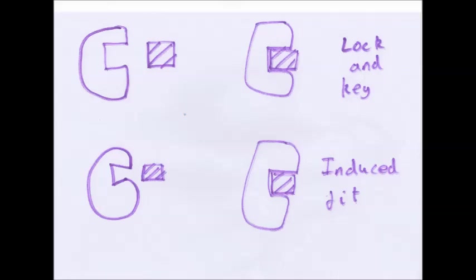There are two models which are used to describe how enzymes work. Lock and key and induced fit. Lock and key was the original method. There's a complementary shape, there's the exact right shape for a substrate, substrate fits in, like a key fits into a lock and it stays there until it's broken apart or joined together.